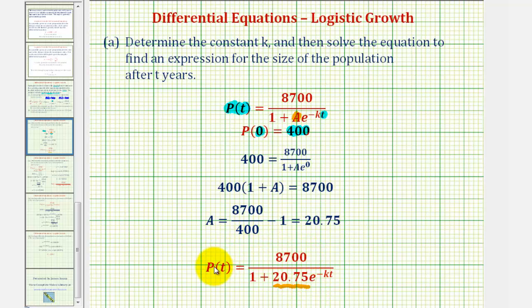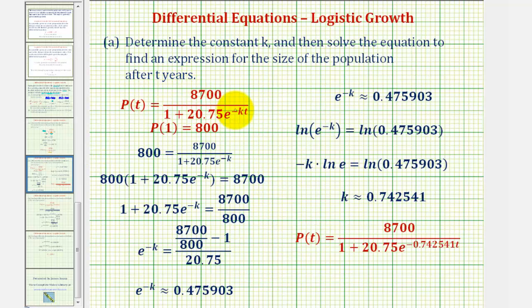Now we'll use the second initial condition to find k. Here's P(t) with the value of A in the equation, and now we know that P(1) = 800. So we'll form another equation by substituting 800 for P(t) and 1 for t. That gives us 800 = 8700/(1 + 20.75e^(-k)).